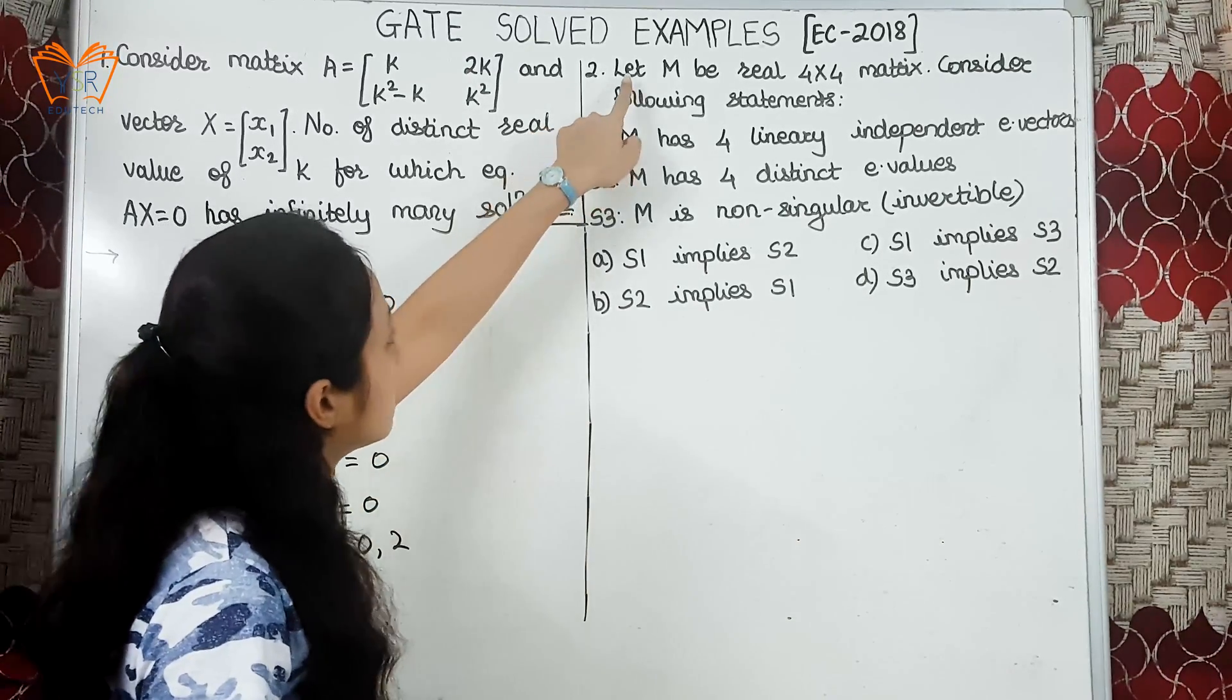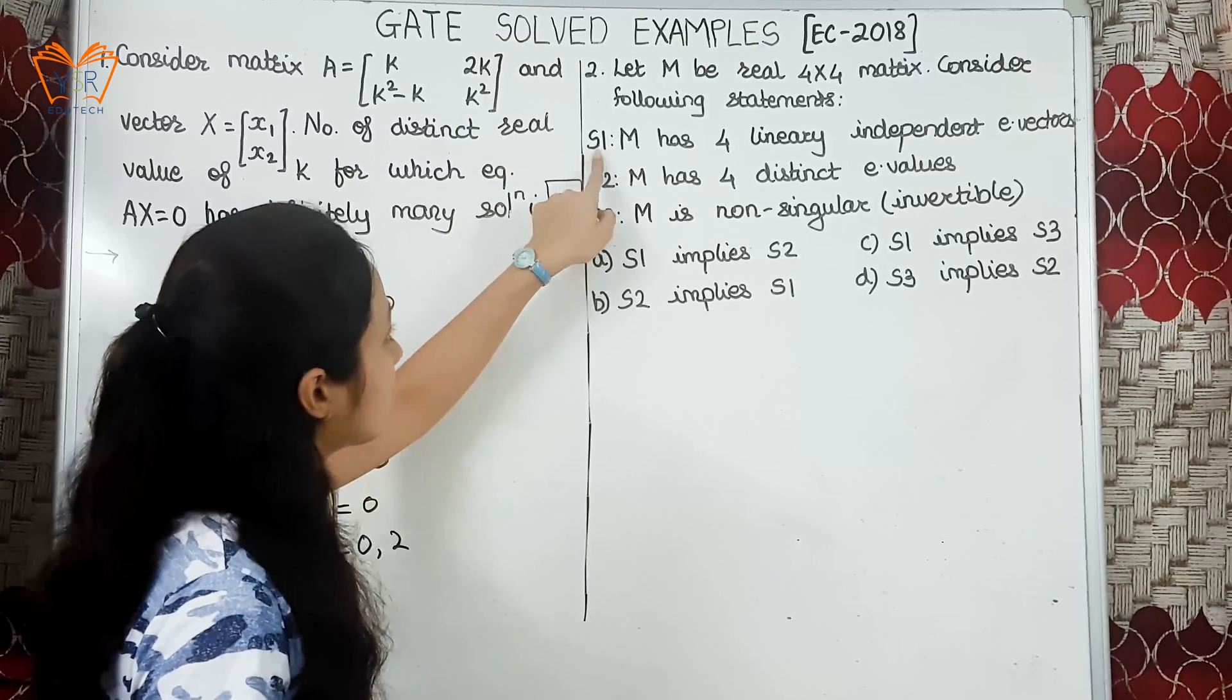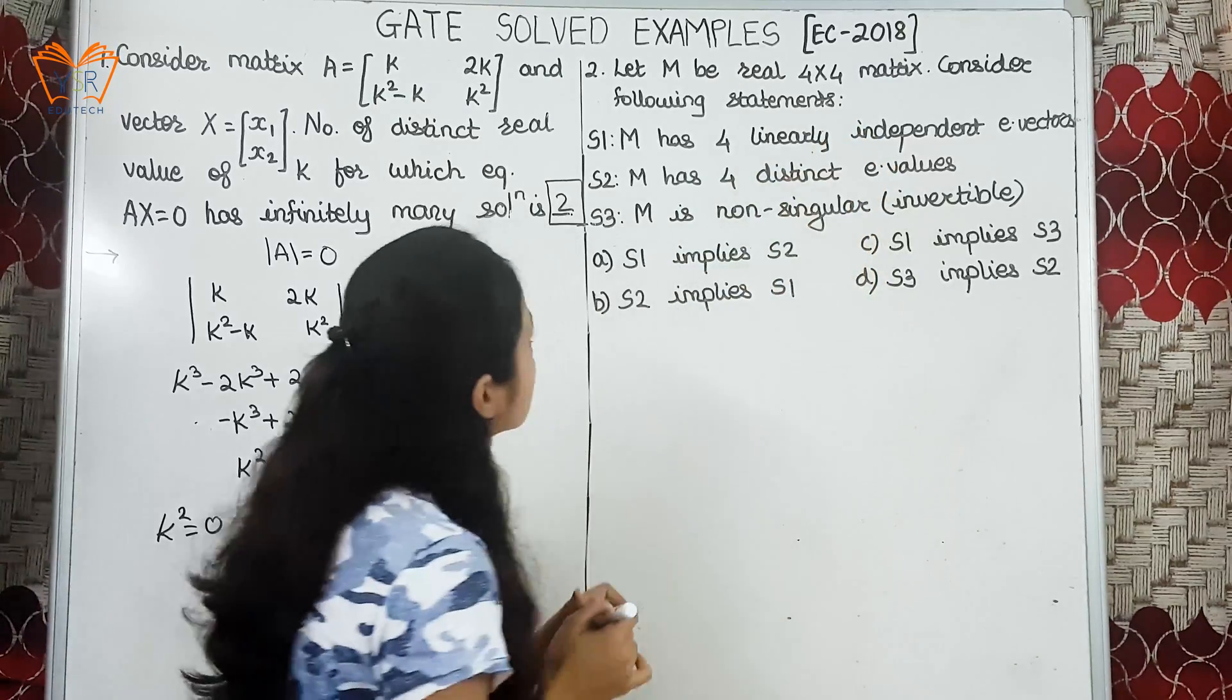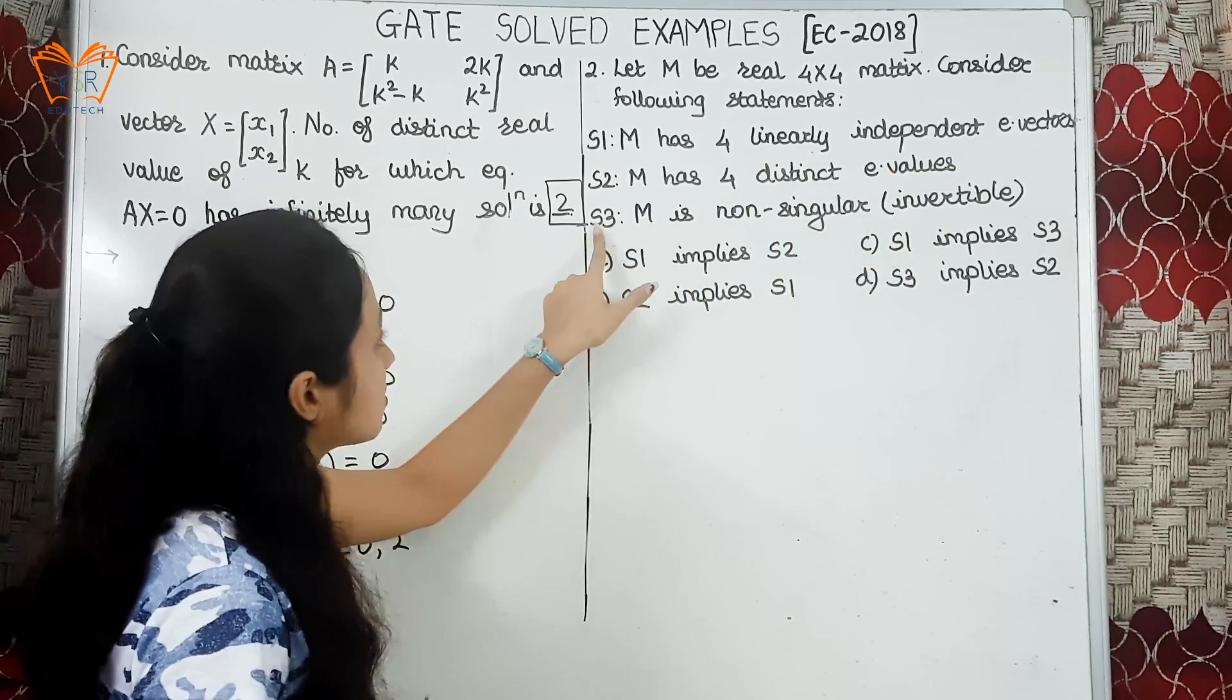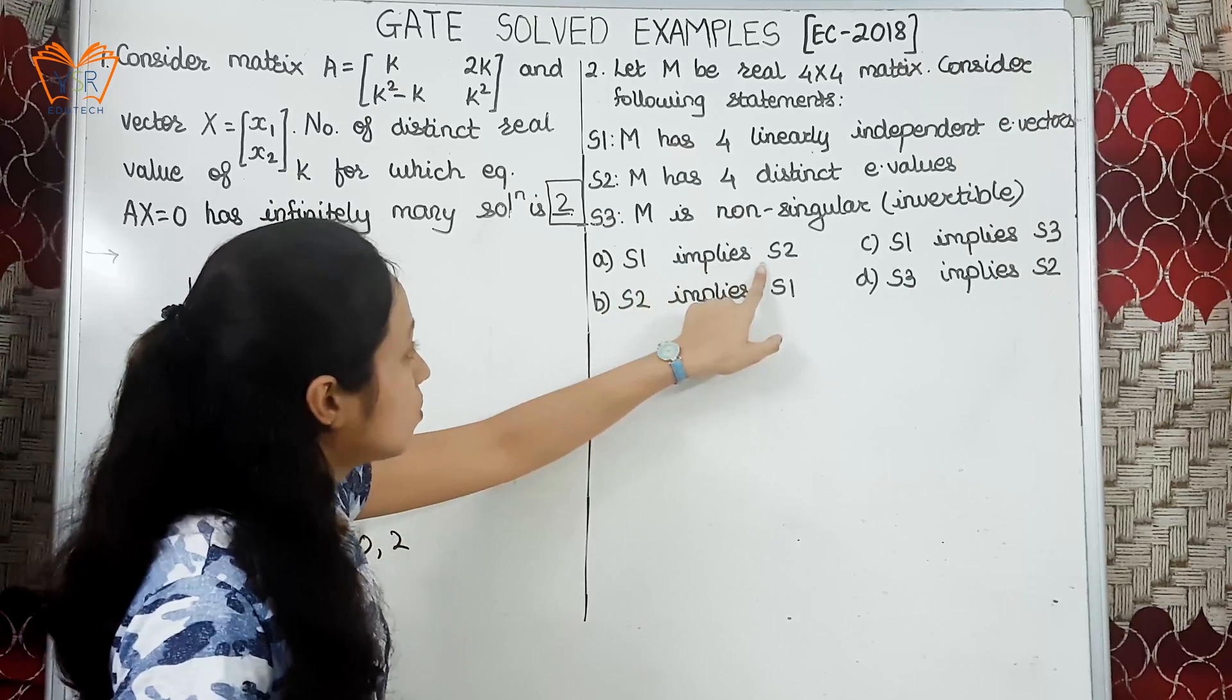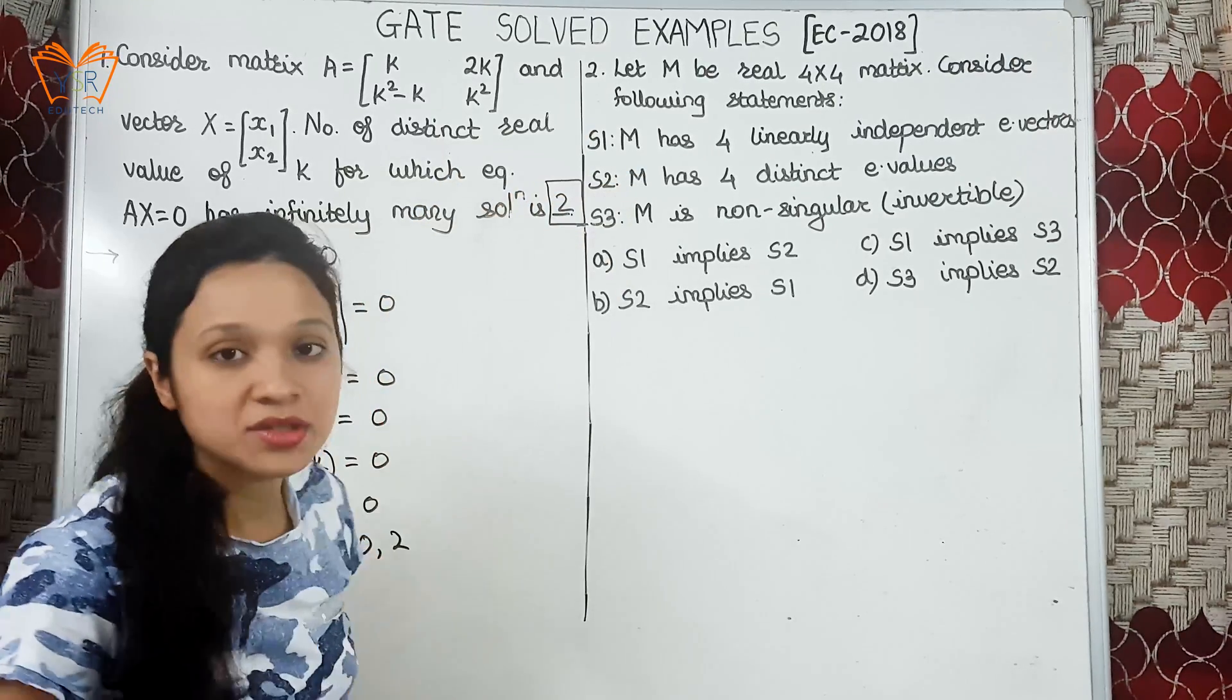Second example: let M be real 4 into 4 matrix. Consider the following statements. There are three statements that they have given. The first statement says M has four linearly independent eigenvectors. Second statement says M has four distinct eigenvalues and statement 3 S3 says M is non-singular invertible. The options given to us are S1 implies S2, second option is S2 implies S1, third option is S1 implies S3 and S3 implies S2.